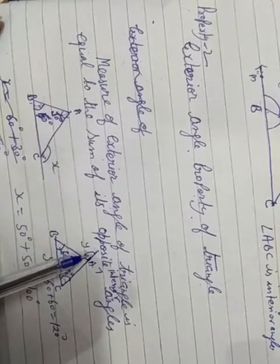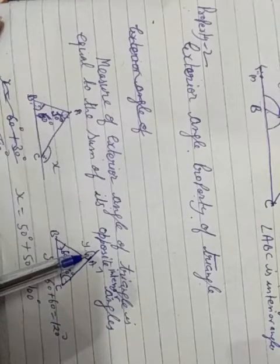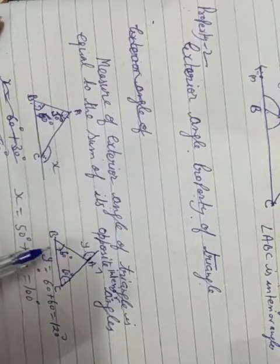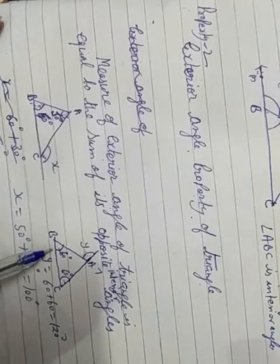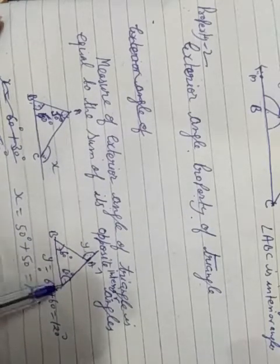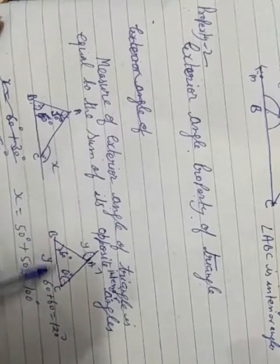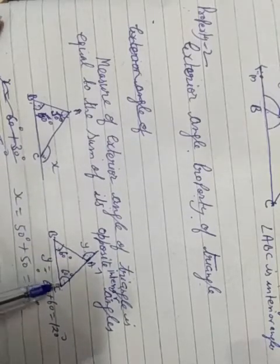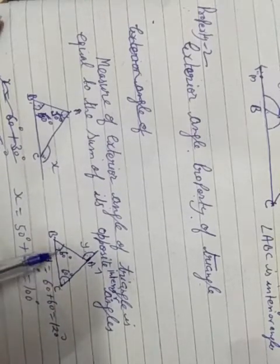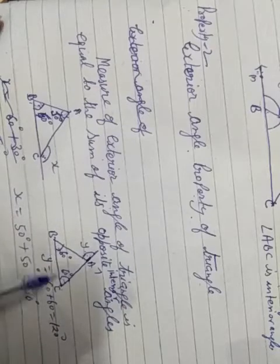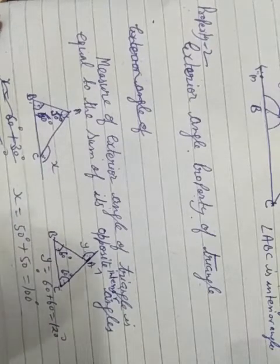The measure of exterior angle of a triangle is equal to the sum of its opposite interior angles. We look at the opposite angles and sum them — that equals the exterior angle.